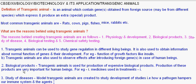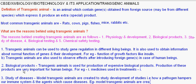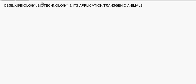Model transgenic animals are created to study complex diseases such as cancer, cystic fibrosis, rheumatoid arthritis, and Alzheimer's.